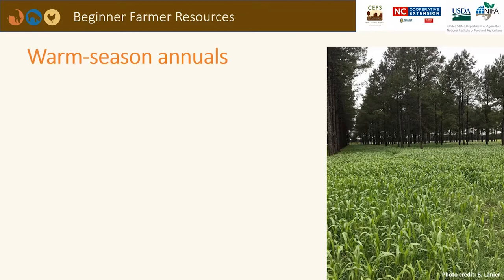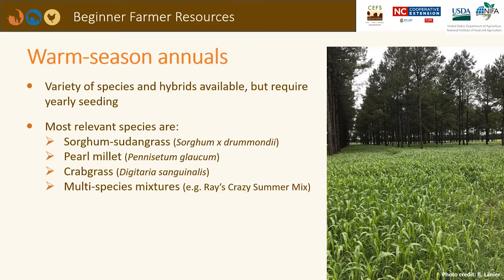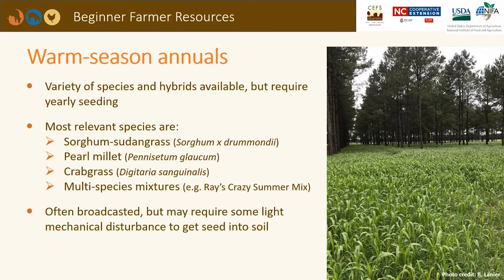Warm season annuals can be a good option in a silvopasture system, especially in beginning years for baleage or hay. There are a variety of species but yearly seeding is required. Some of the most relevant species are sorghum sudangrass, pearl millet, crabgrass, or a multi-species mixture such as Ray's Crazy Summer Mix. They are often broadcast, though light mechanical disturbance helps seed-to-soil contact. They have high nutritive value for animals but higher fertility requirements. Cool season grasses — particularly tall fescue — are very possible throughout North Carolina, more so in the western part of the state. Improved varieties with novel endophyte are available. The wild-type endophyte-infected Kentucky 31 is most common but contains ergot alkaloids that can cause negative effects on animal gain and health.